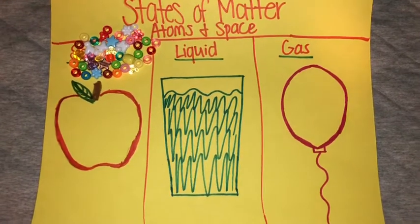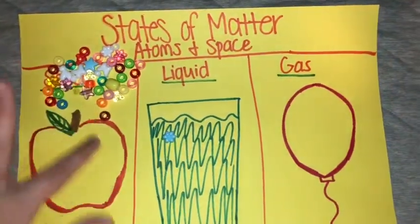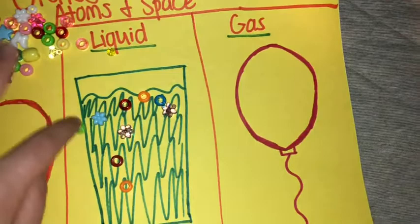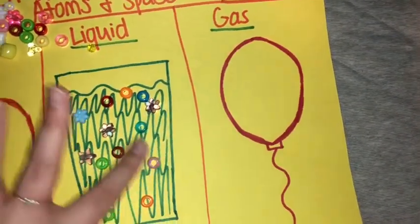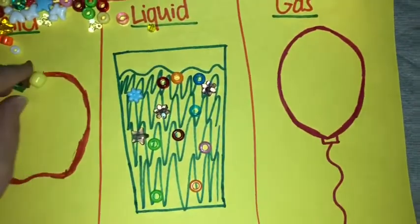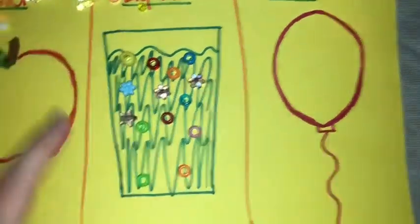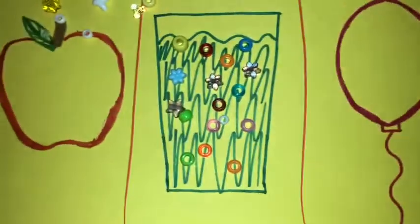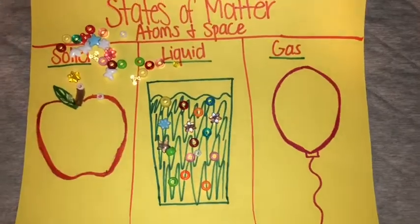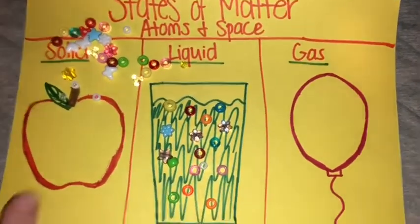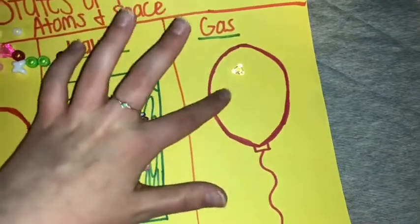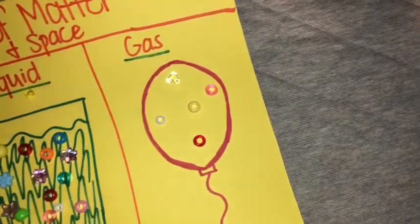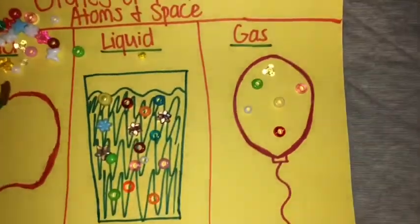Now we're going to focus on the atoms inside of a liquid. In a liquid, the atoms are close together but they are able to move around. As you can see, they're not as packed together like in the solid — they still have room to move around and they're not in a fixed position like in the solid. Now for the atoms inside of a gas, the atoms move around completely freely. They are not close together at all, which means they are free to move around. So that's what that would look like.